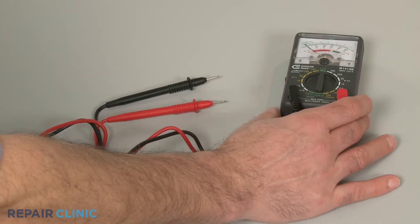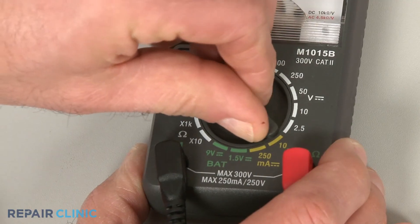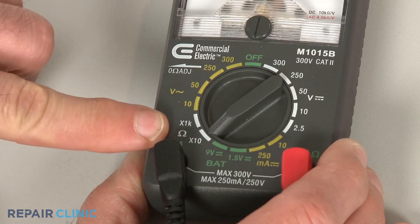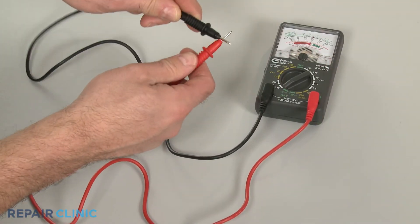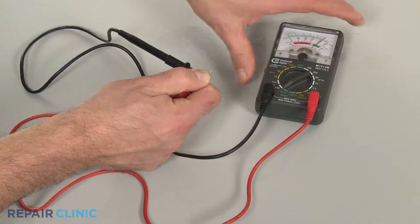When using an analog model, first rotate the range selection dial to the lowest setting for ohms of resistance. Then calibrate the meter by pinching the probes together while adjusting the needle to read zero.